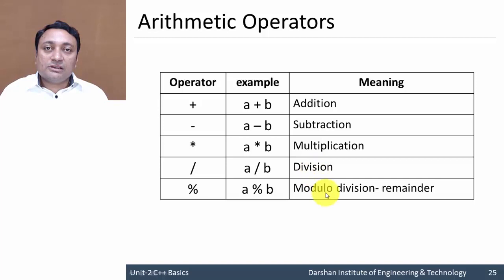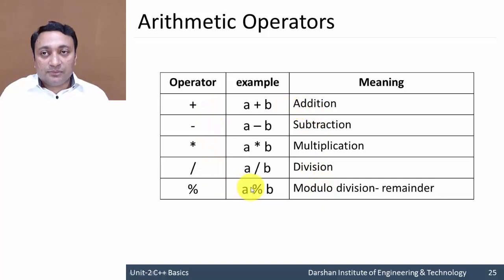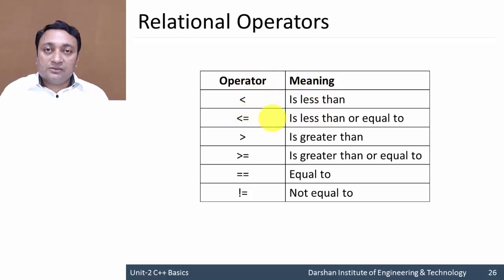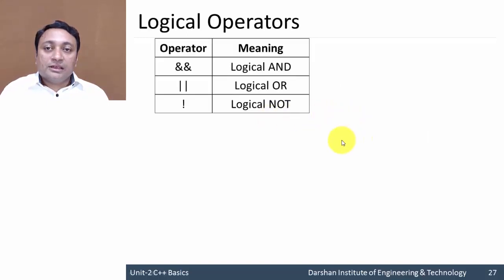And modulo division operator, which are used to perform arithmetic operations in your program. The next are relational operators, which are used to represent relations between two identifiers: less than, less than or equal to, greater than, greater than or equal to, equal to, and not equal to. Then let us discuss logical operators: logical AND,